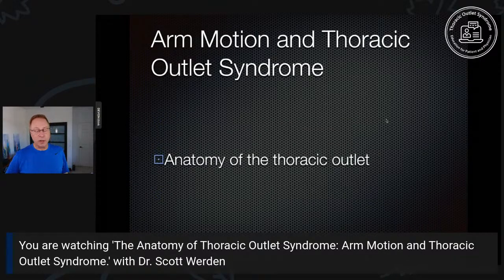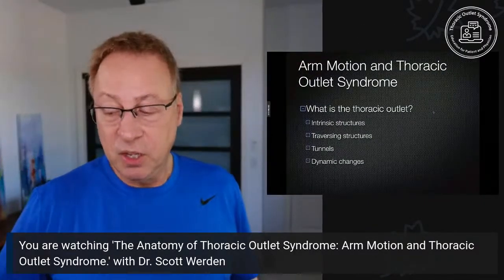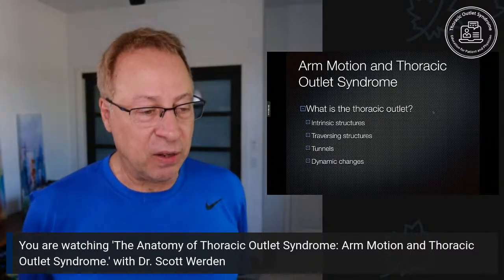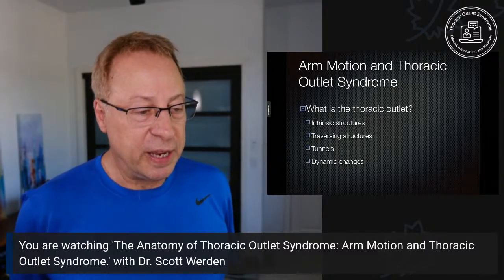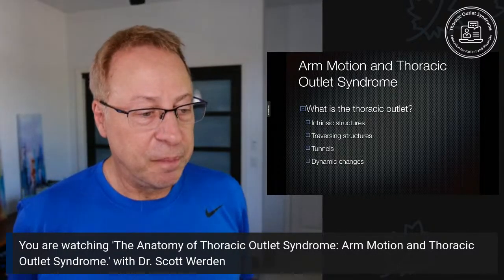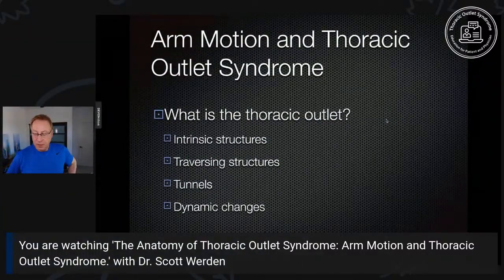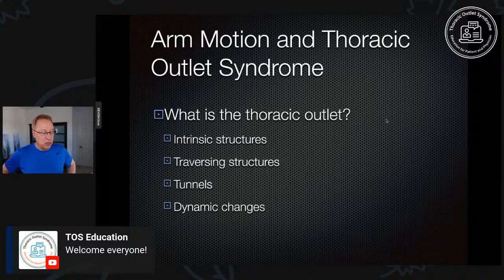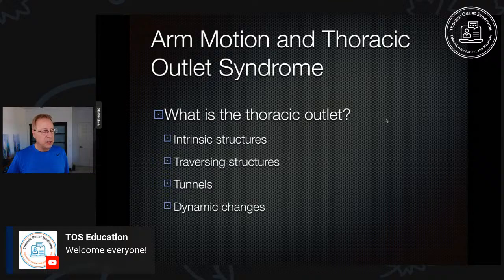Let's go over some key points of the anatomy of the thoracic outlet. The natural intrinsic structures include the side of the cervical spine, the top of the chest, the beginning of the shoulder, the rib, and the collarbone. The traversing structures are the brachial plexus — a big nerve bundle — the subclavian artery, which provides almost all blood flow to the arm, and the subclavian vein, which drains almost all blood flow from the arm.